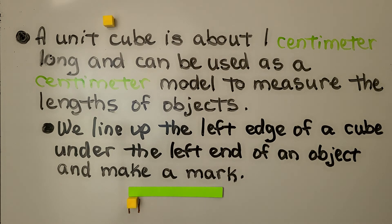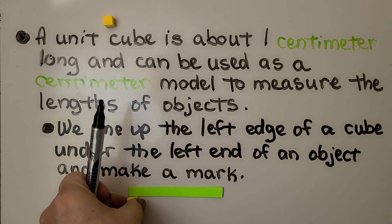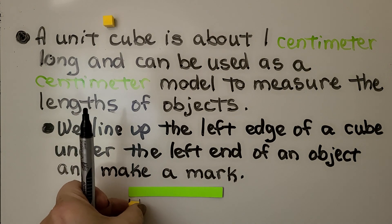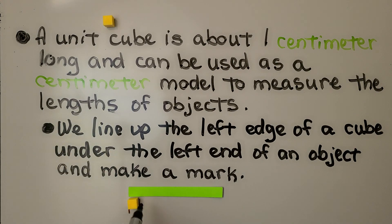We line up the left edge of the cube under the object and we make a mark. So we have a mark at the end of the object. We're measuring this green line and we put our cube and then we put another mark on this side.